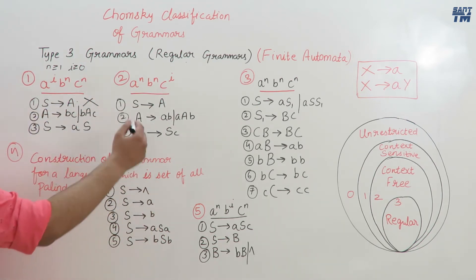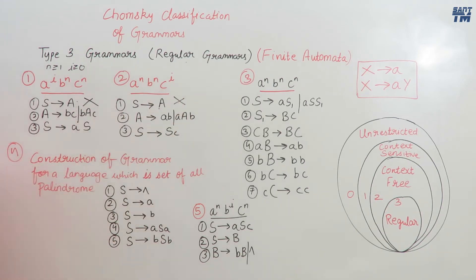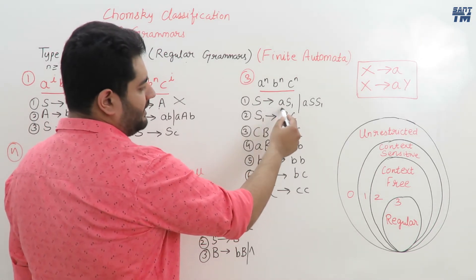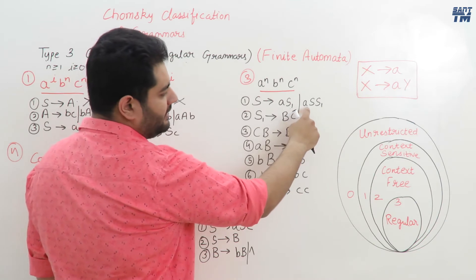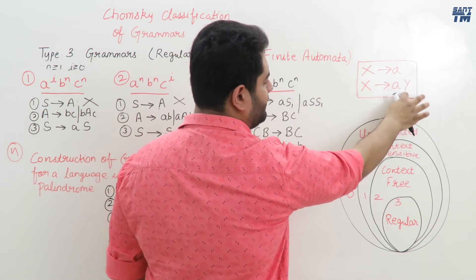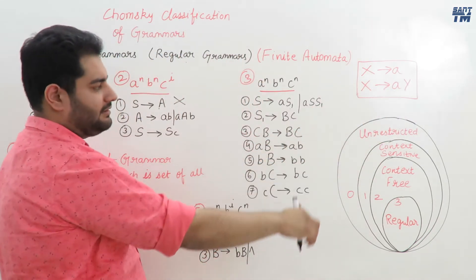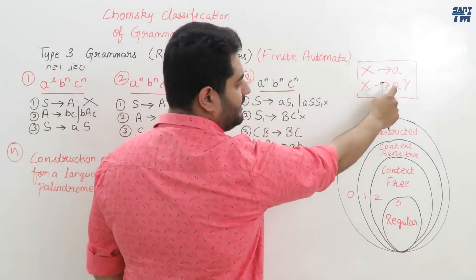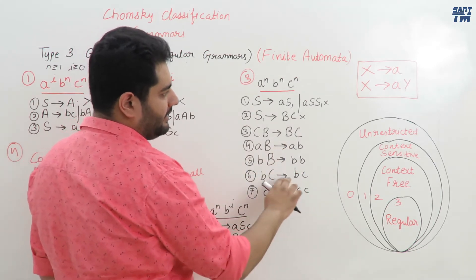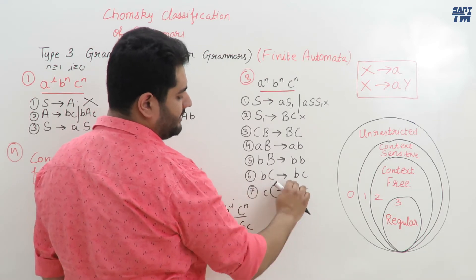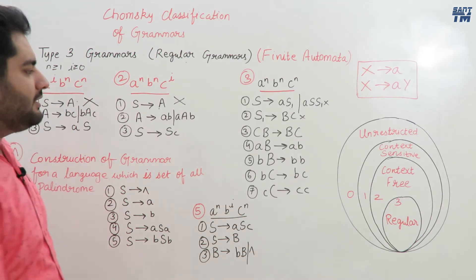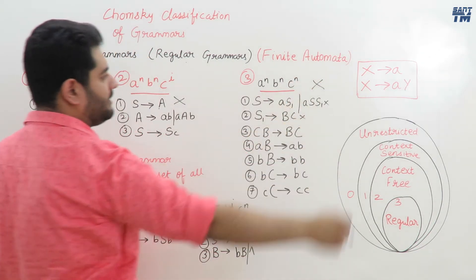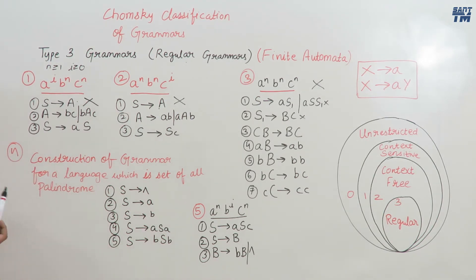For a^n b^n c a^c, S derives A is again the same type of invalid production, so this grammar is also not regular. For a^n b^n c^n, we have S derives A S1 which follows regular grammar rules, but S1 derives BC has two non-terminals, which is invalid. Similarly, CB derives BC and other productions are not valid since only one non-terminal is allowed. Therefore a^n b^n c^n is not a regular grammar.